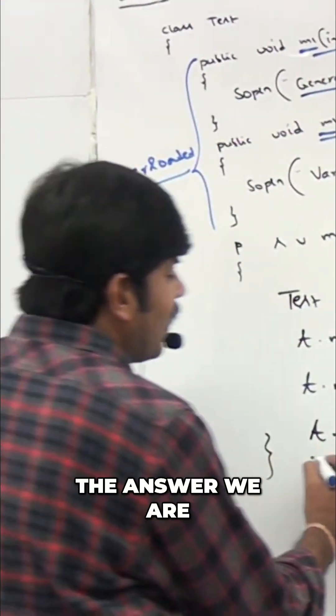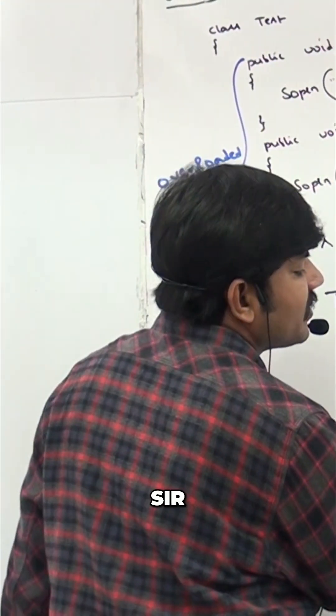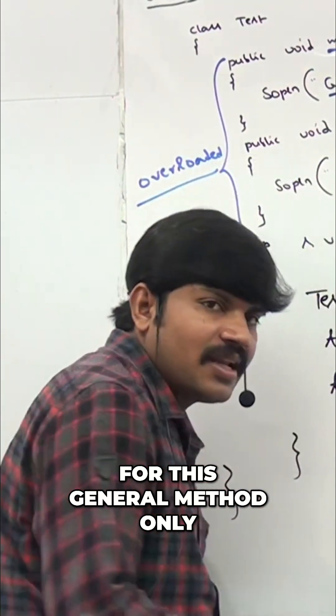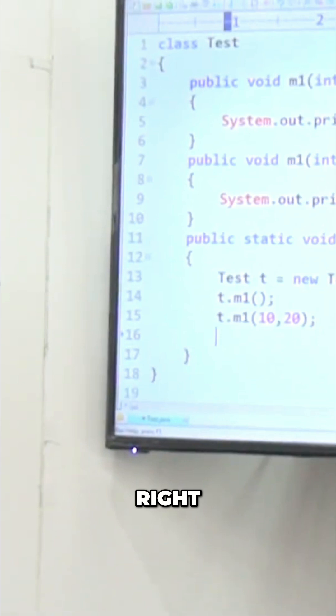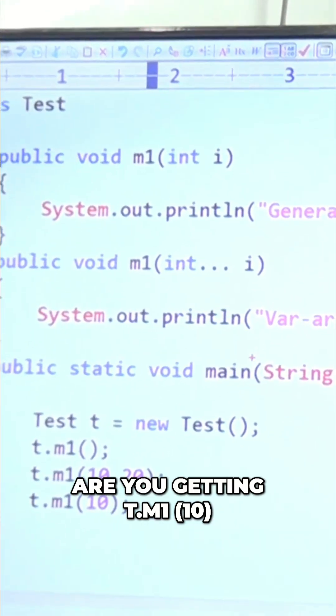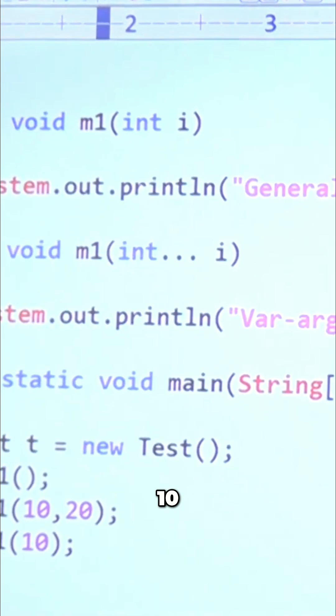So now what is the answer we are going to get? For this, general method only. Now have a look, observe carefully: t.m1(10). We are getting t.m1(10), only one int value.